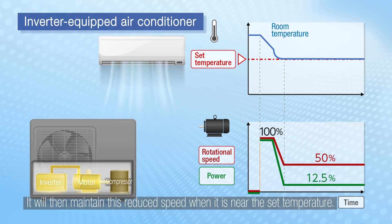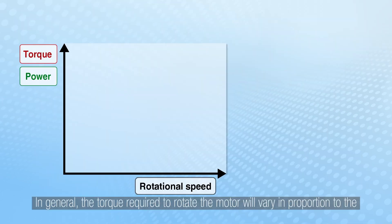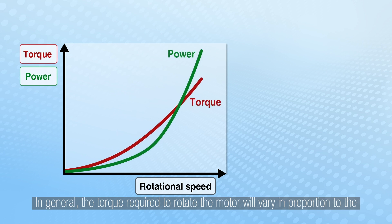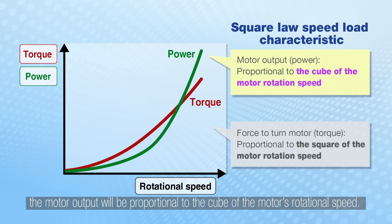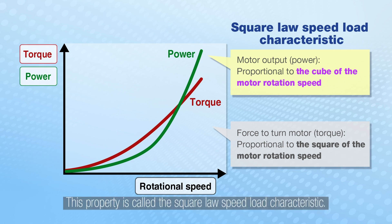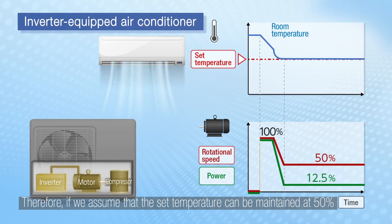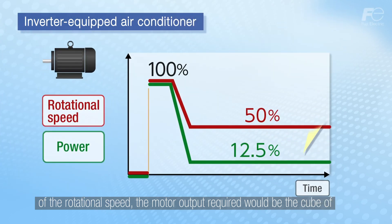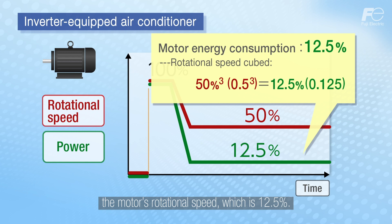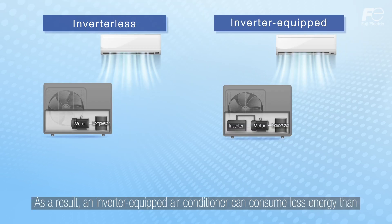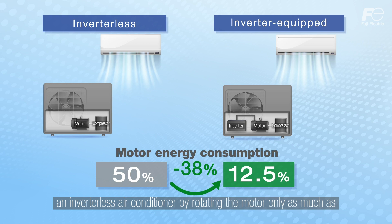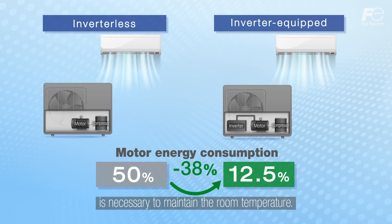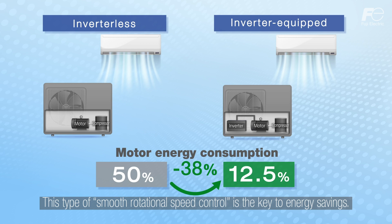The inverter will then maintain this reduced speed when near the set temperature. In general, the torque required to rotate the motor varies in proportion to the square of the motor's rotational speed, and the motor output is proportional to the cube of the motor's rotational speed. This property is called the square law speed-load characteristic. Therefore, if the set temperature can be maintained at 50% of the rotational speed, the motor output required would be the cube of 50%, which is 12.5%. As a result, an inverter-equipped air conditioner can consume less energy by rotating the motor only as much as is necessary to maintain the room temperature. This type of smooth rotational speed control is the key to energy savings.